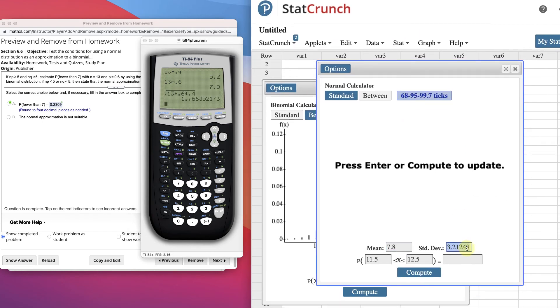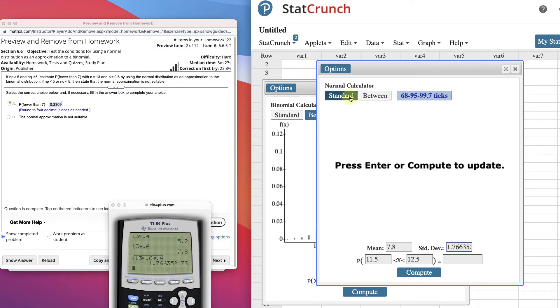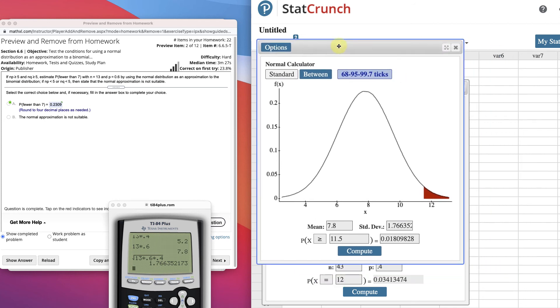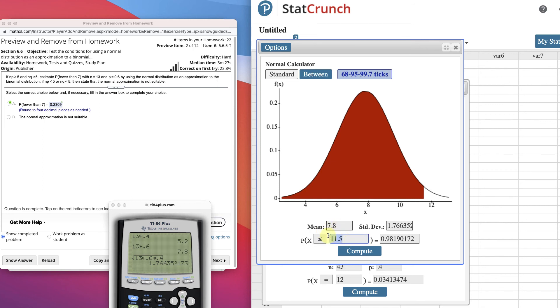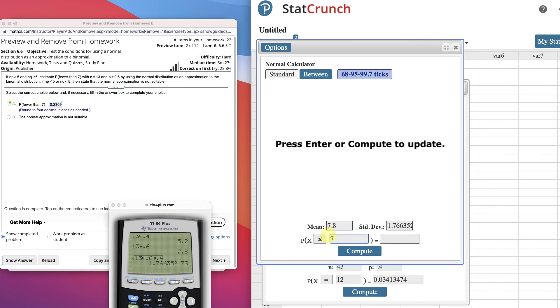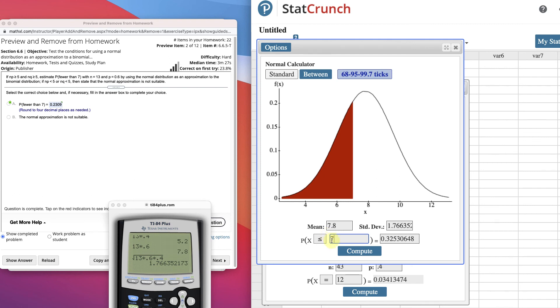StatCrunch, put in the standard deviation, 1.766352173. You might as well put it all in. We're not finding an in-between anymore. We're finding a standard, so I'm going to switch it. And now we're finding fewer than 7, so we have to go less than or equal to what? If we put 7 in, if it's equal to 7, that's not going to be right, is it? Because I don't want to be equal to 7. I don't want that rectangle.